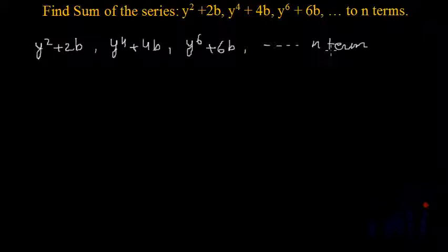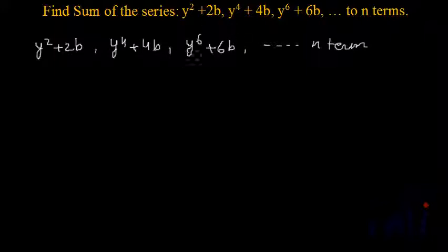It doesn't look like a geometrical progression. It doesn't even look like an arithmetical progression. We have the first term as y squared plus 2b, then y to the power 4 plus 4b, then y to the power 6 plus 6b. So how to solve it? We'll try to solve it.